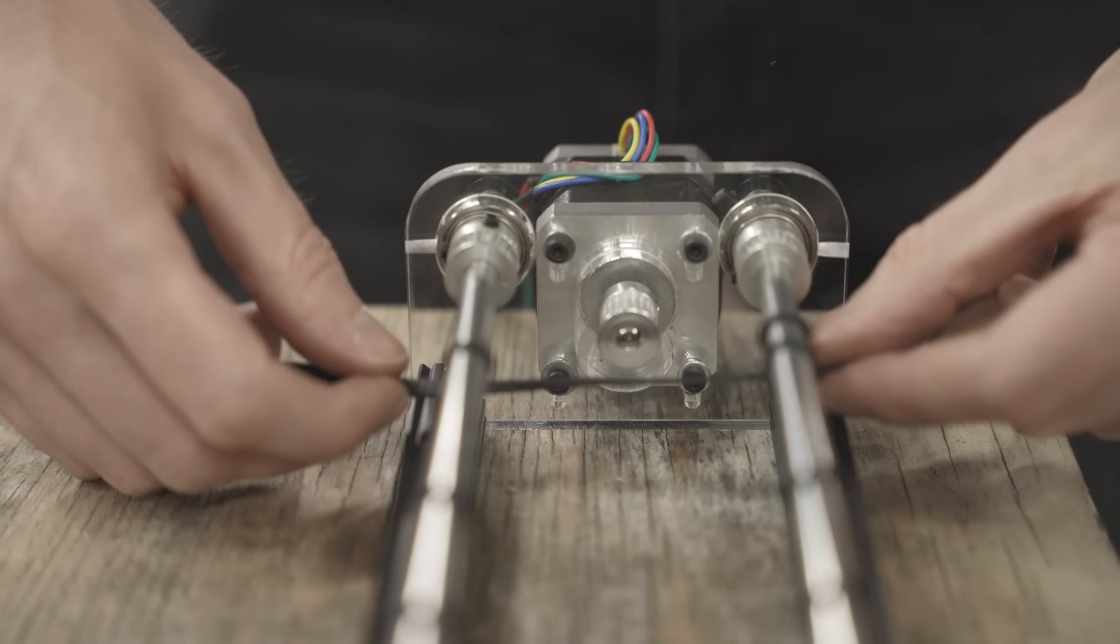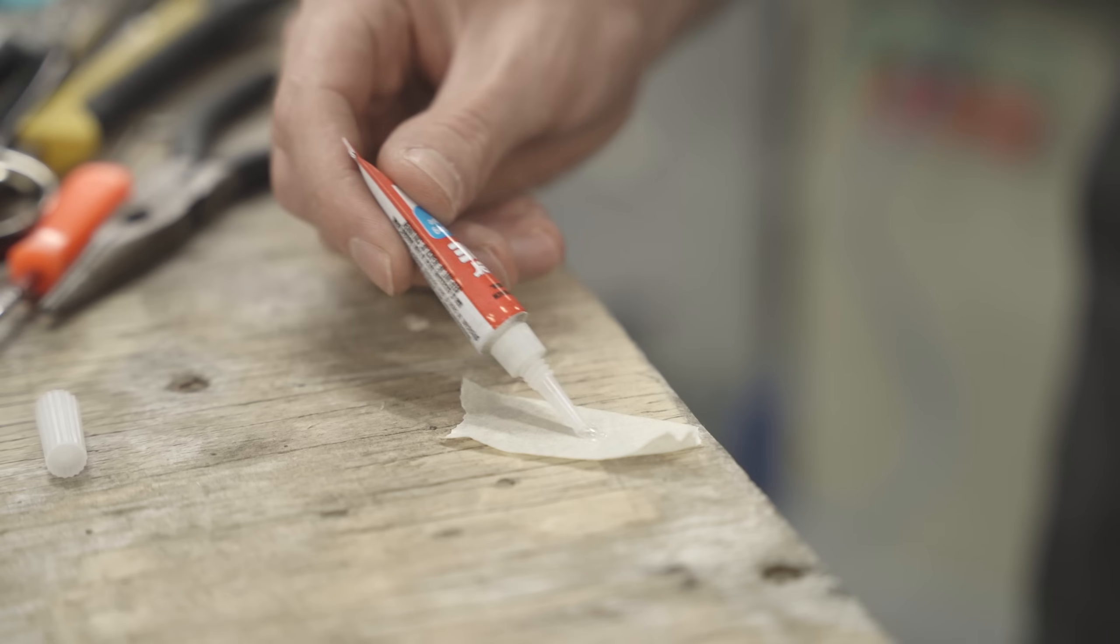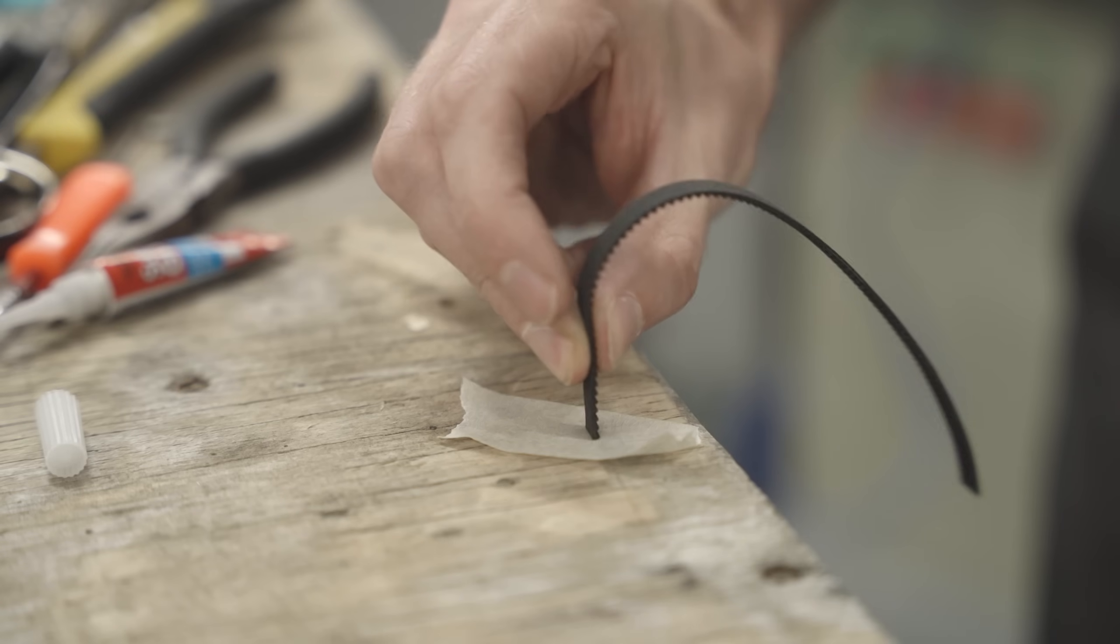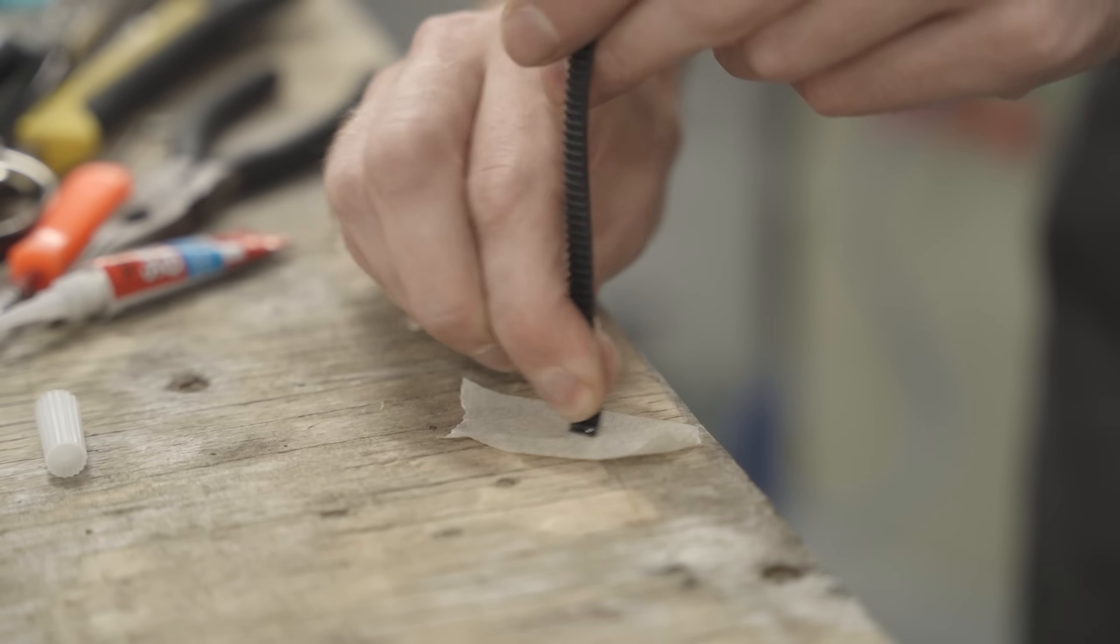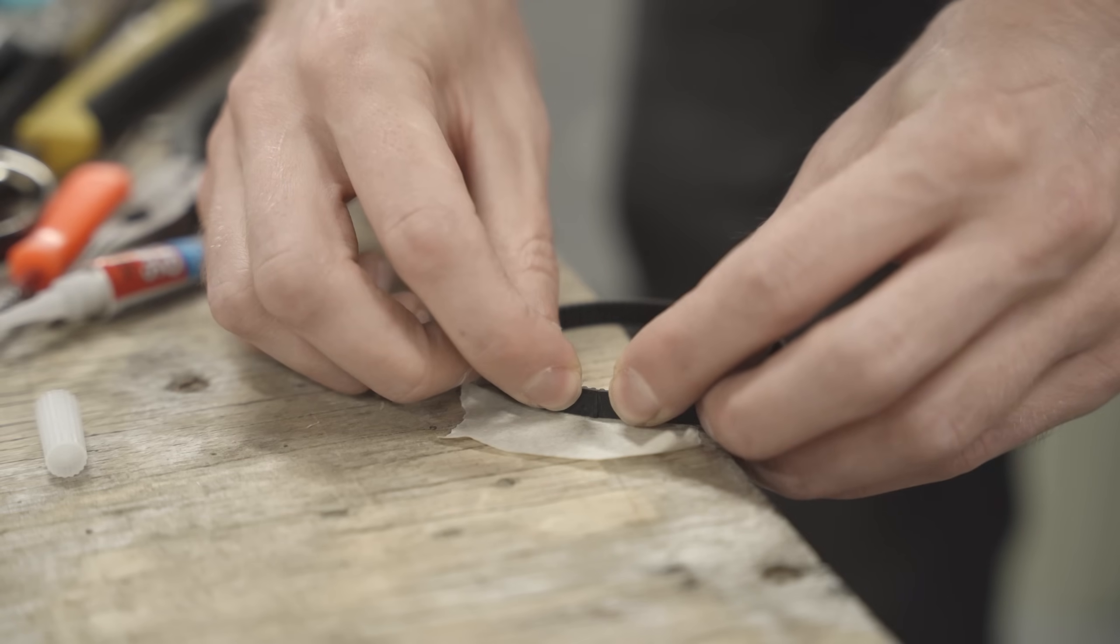For the timing belt, I'm crudely making a length into a close loop by super gluing the ends together. This will work temporarily if you don't put too much tension on it and should do the trick for us today.